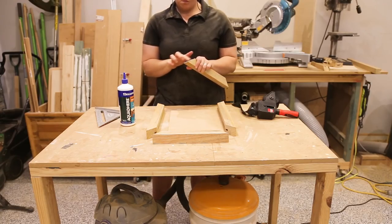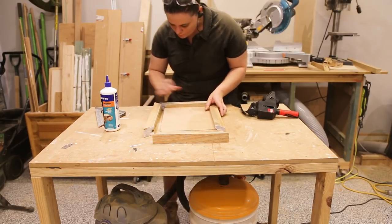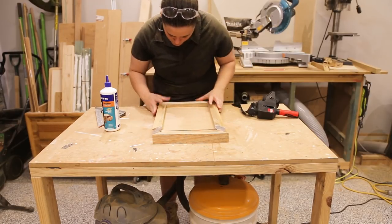With all my pieces cut I could then glue up my frame using a band clamp making sure checking for square as I was tightening the clamp up.